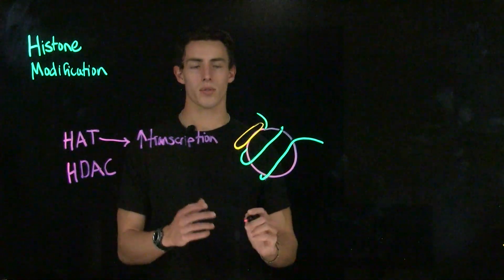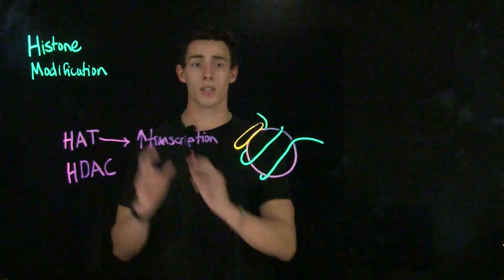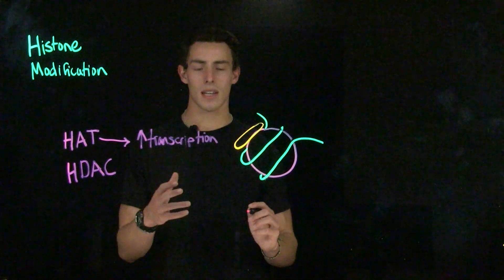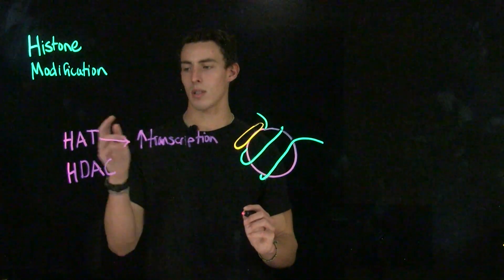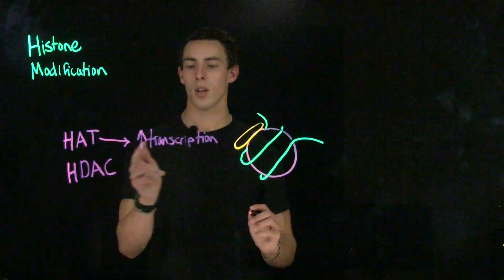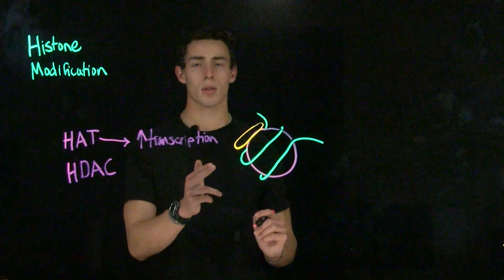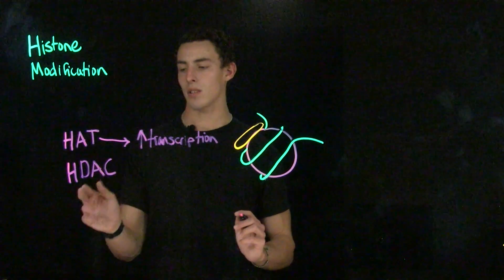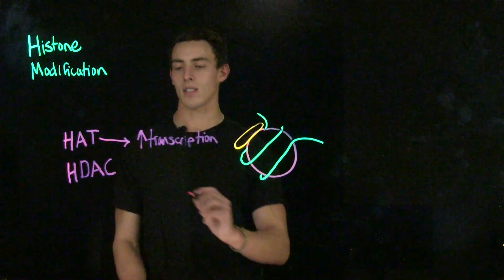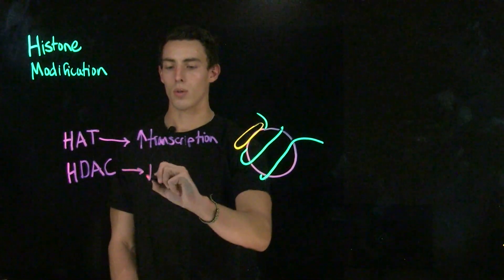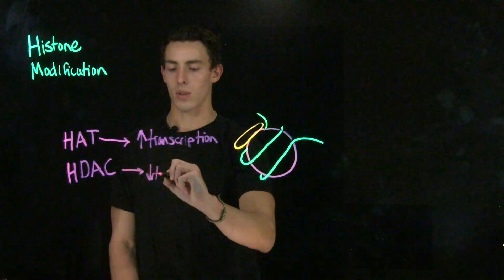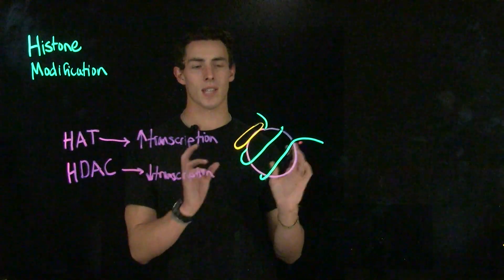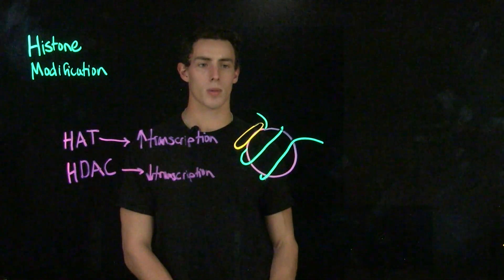So it makes it easier for us to undergo transcription if we acetylate our histone tails. If we acetylate histone tails using histone acetyltransferase, we're going to increase transcription. However, if we deacetylate it using histone deacetylase, or HDAC, we're going to decrease transcription because we're going to be winding our DNA even tighter around our histone octamer.